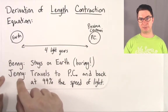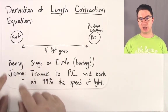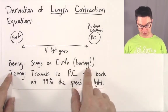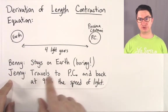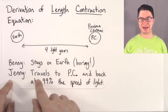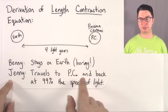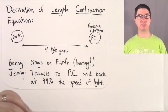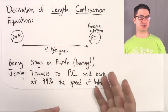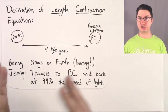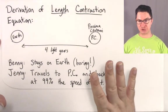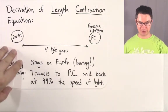We've got a pair of twins, Benny and Jenny. Benny stays on Earth, while Jenny is going to travel to Proxima Centauri and back at 99% of the speed of light. Our question is: do they agree on how much time passes, and do they agree on how much distance each one traveled? To answer this question, I suggest we make a table.